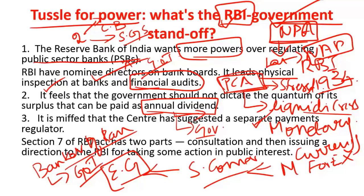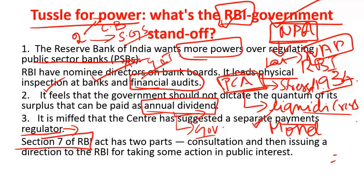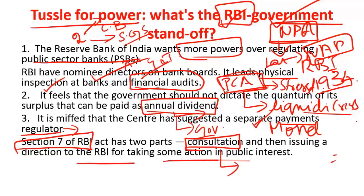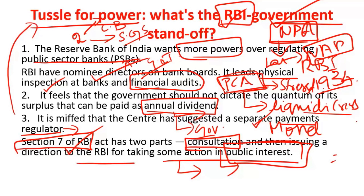The third reason for the struggle between RBI and the government is the proposed Prepaid Payment Regulator to be set up by the government, which RBI opposes as it believes regulation of the prepaid payment system falls under its ambit. We also need to know about Section 7 of the RBI Act, which has two parts: first, the government can use a consultation mechanism to talk with RBI on any issues; if talks do not yield results, it can even issue directions to RBI in public interest. This clause has never been invoked since 1934, and the government's plans to invoke it have further increased tensions between RBI and the Government of India.